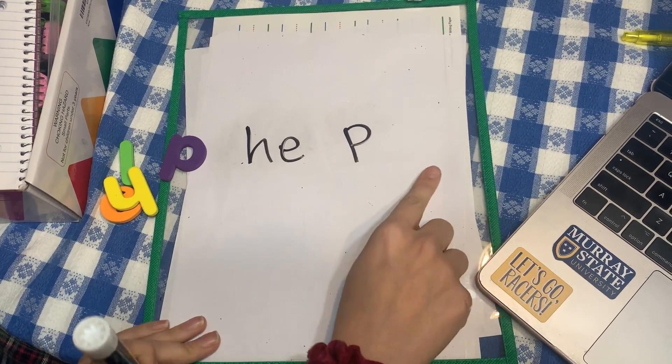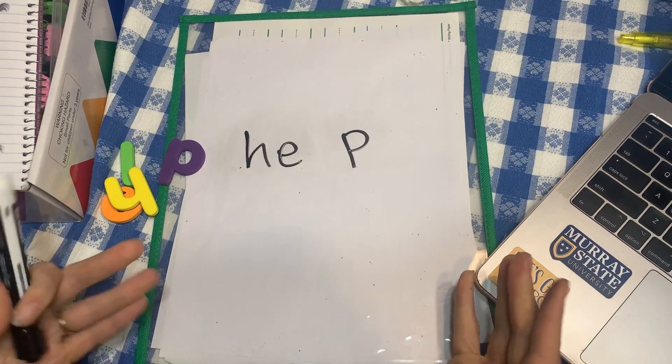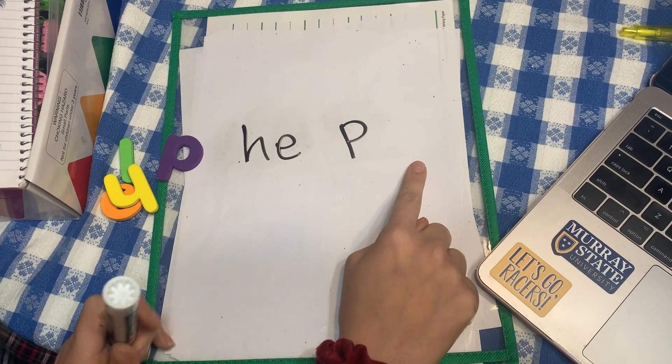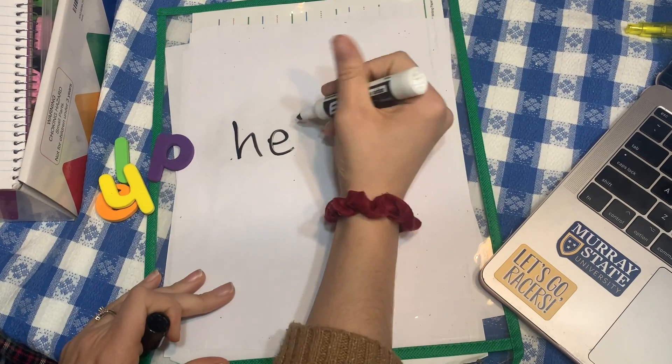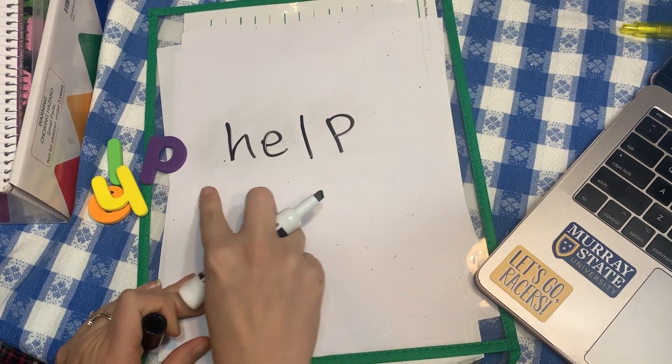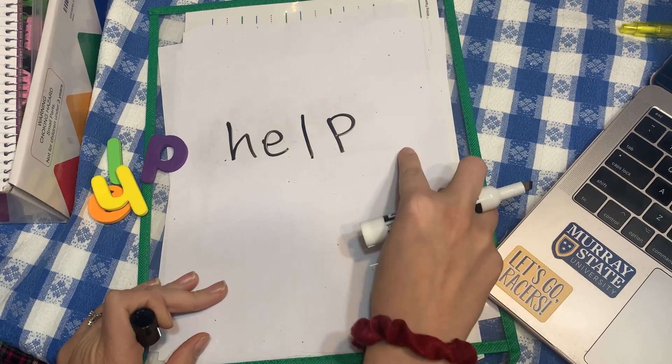Then you'll have the students sound it out again and say, what's missing? What sound is missing from here? The students will then try to figure out what sound is missing. In this case, it was the L, help, and re-sound out the word.